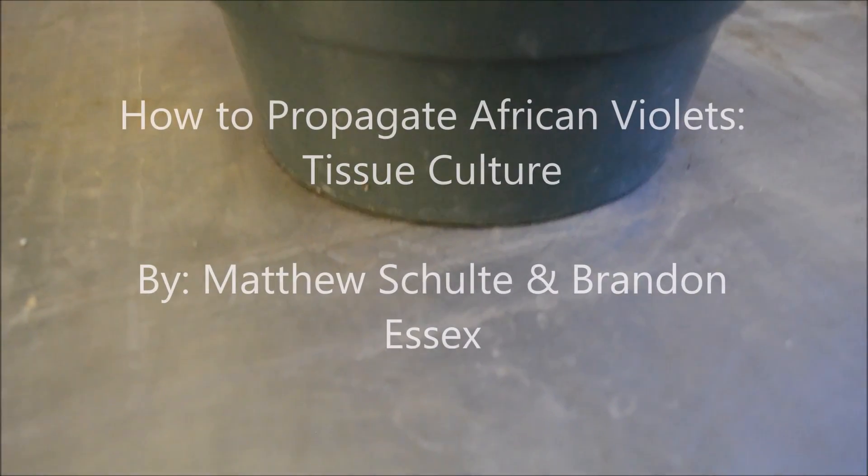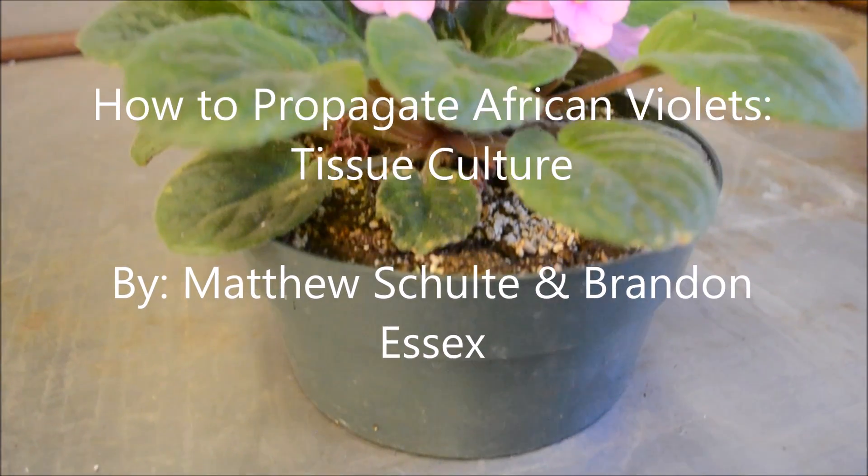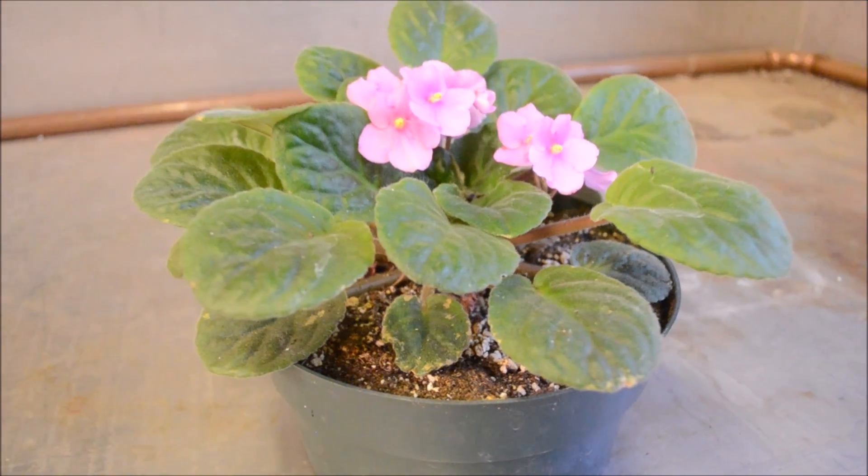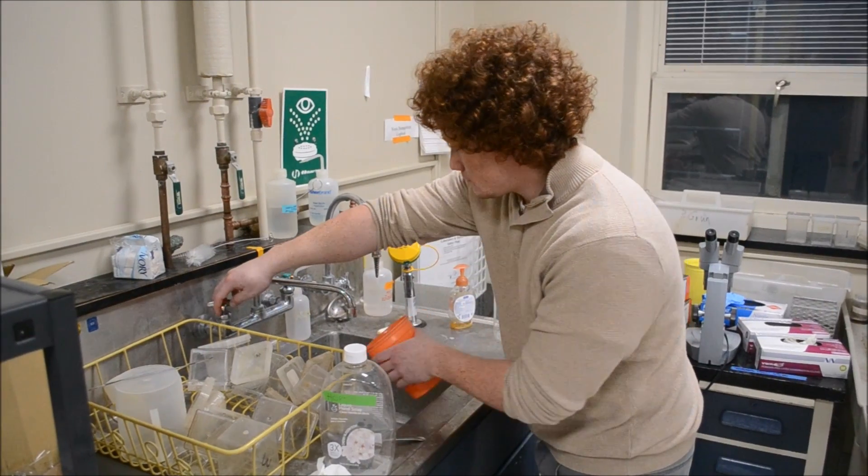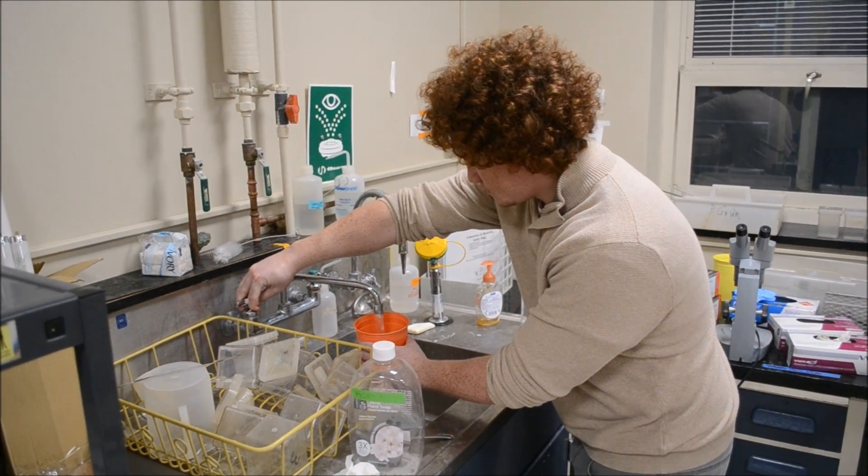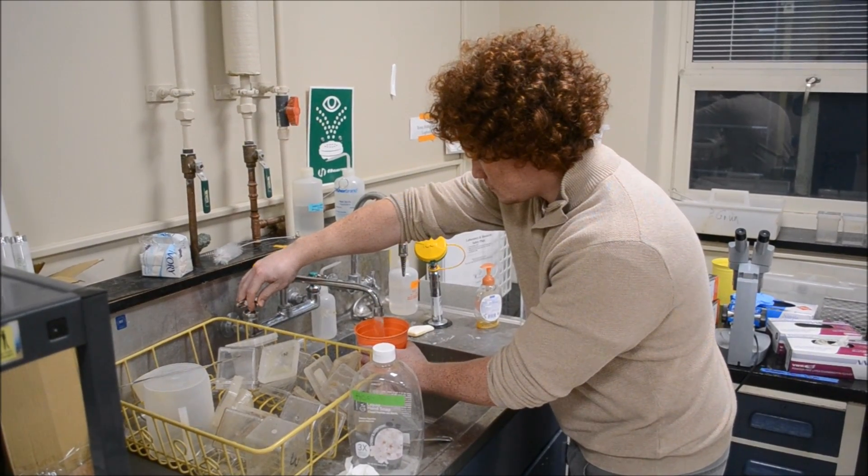The African violet, also known as Saintpaulia ionantha, is an herbaceous perennial that is part of the Gesneriaceae family. African violets can be easily propagated via microculture, also known as tissue culture.